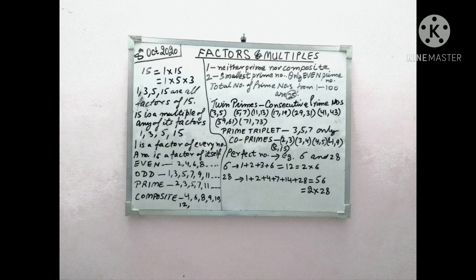The next type of numbers we have are prime triplet. A set of 3 consecutive prime numbers differing by 2 is called a prime triplet. And interestingly, the only prime triplet we have is 3, 5, 7.